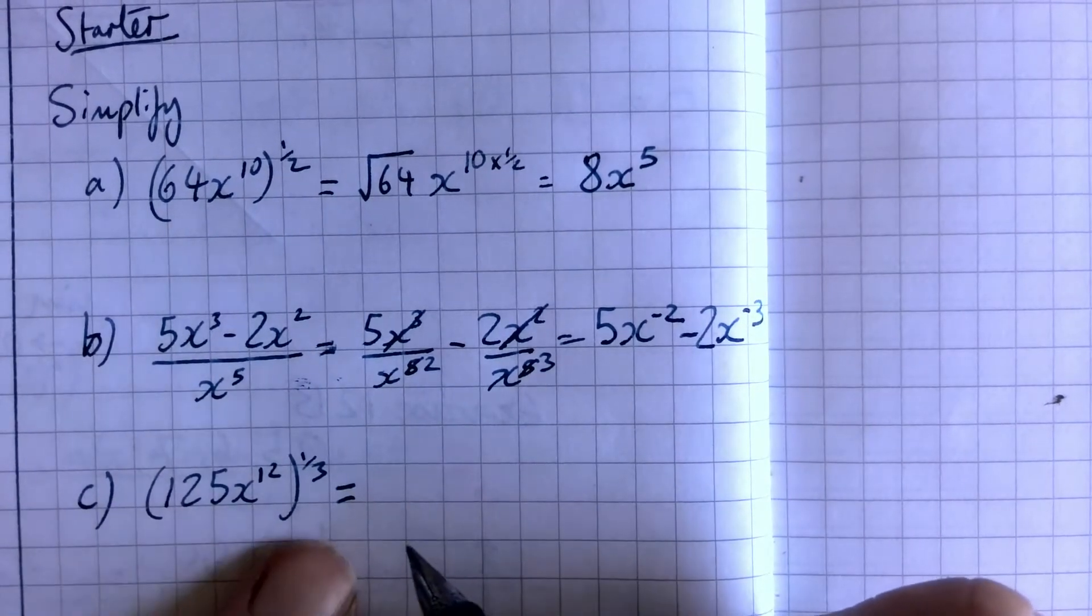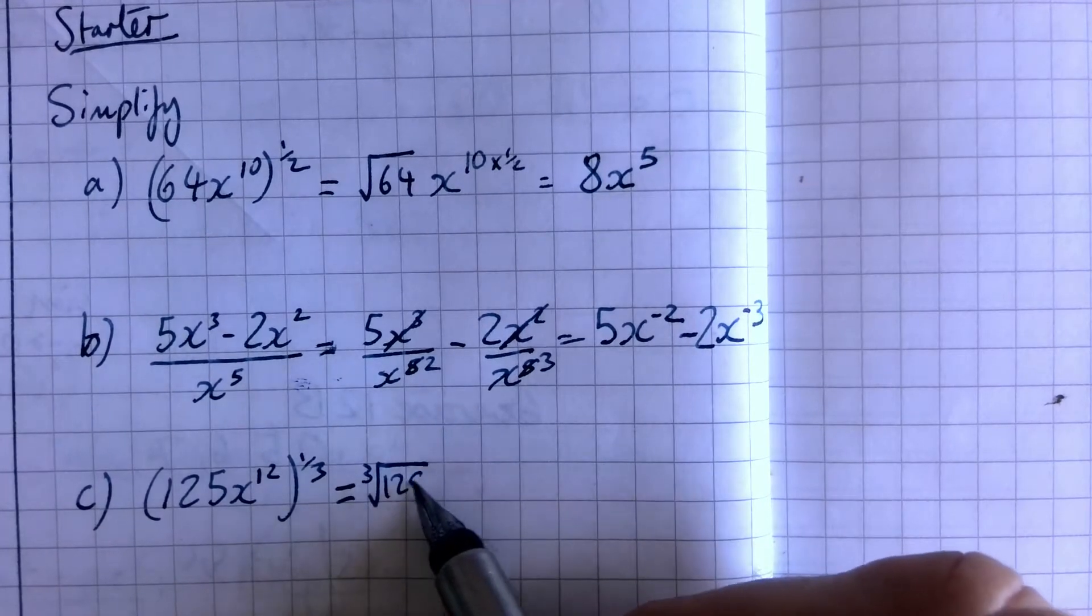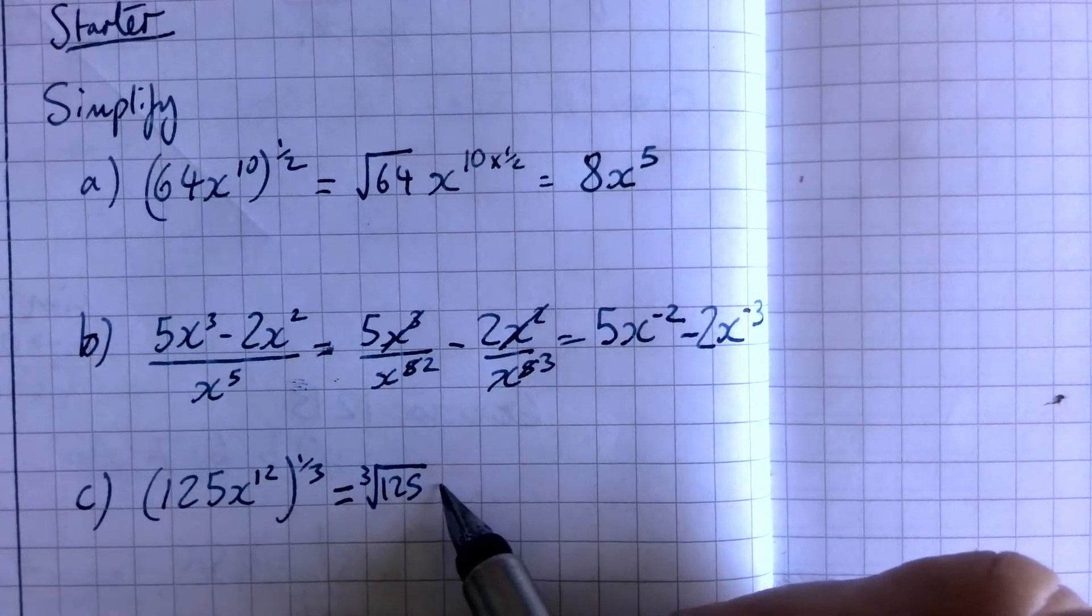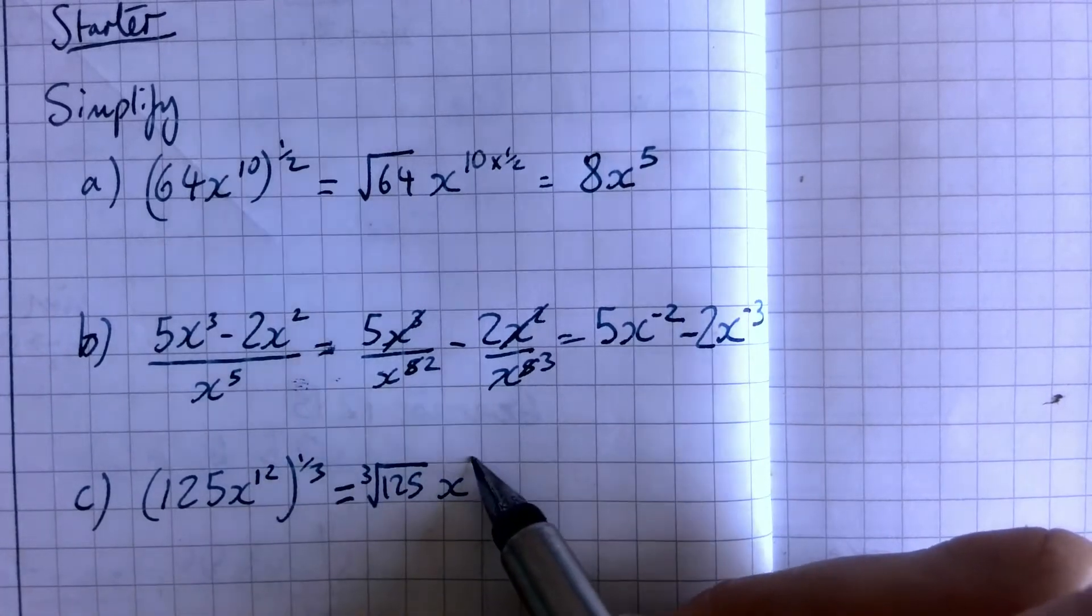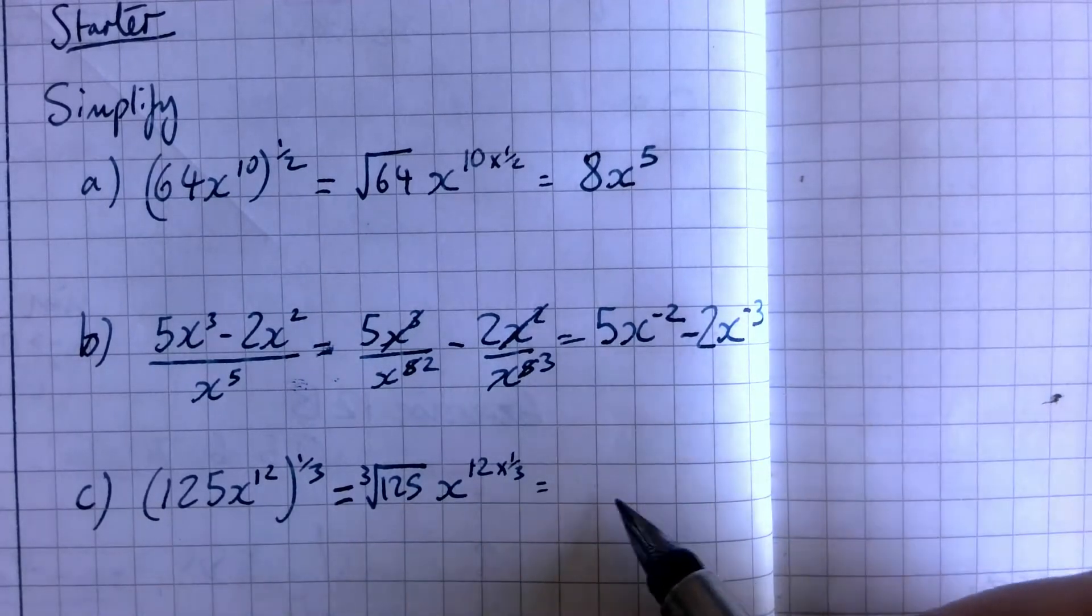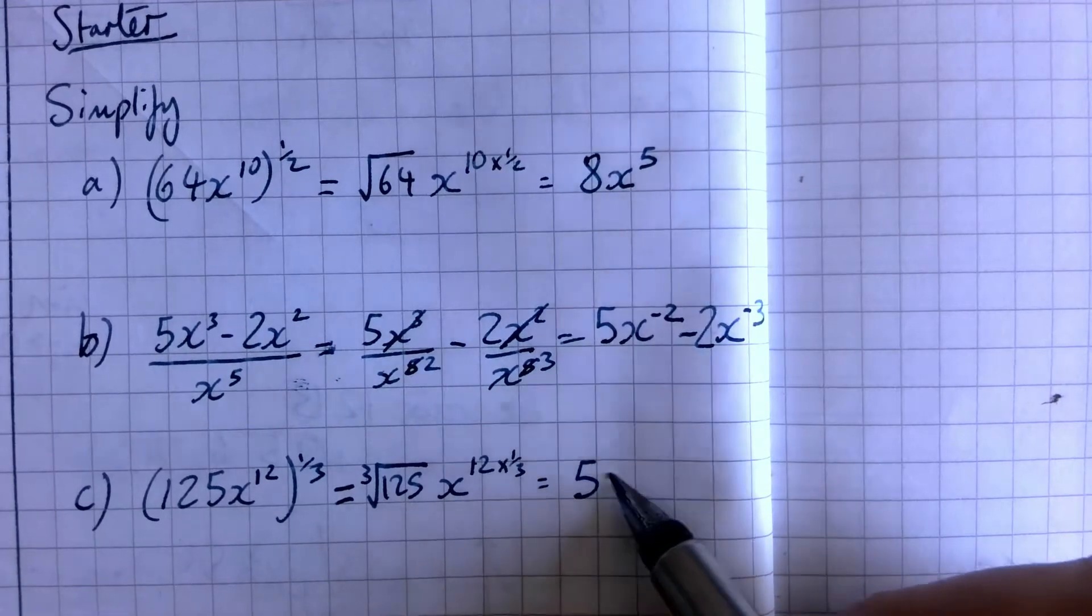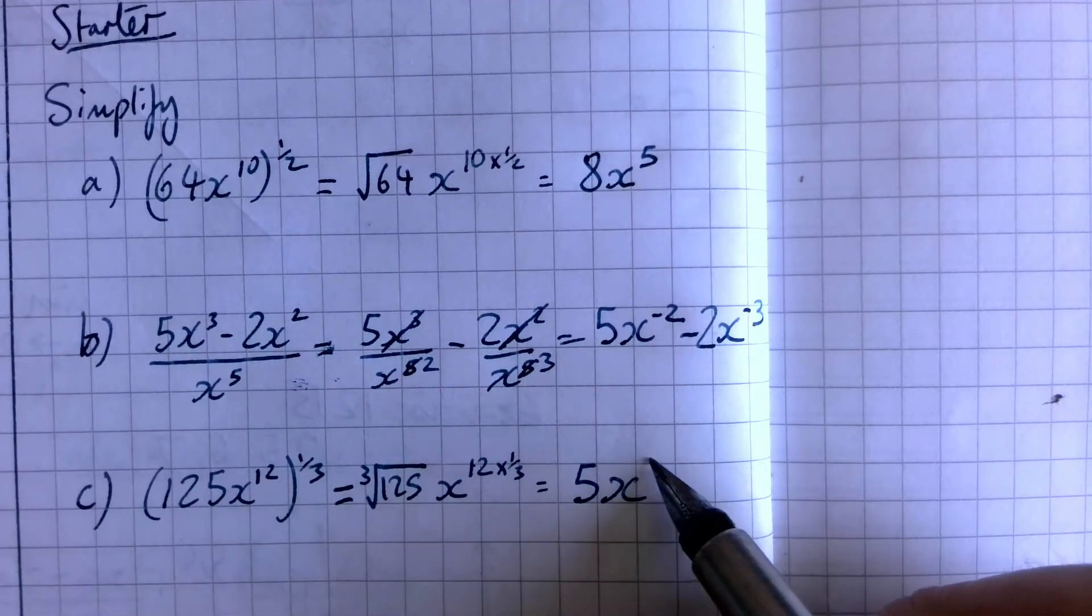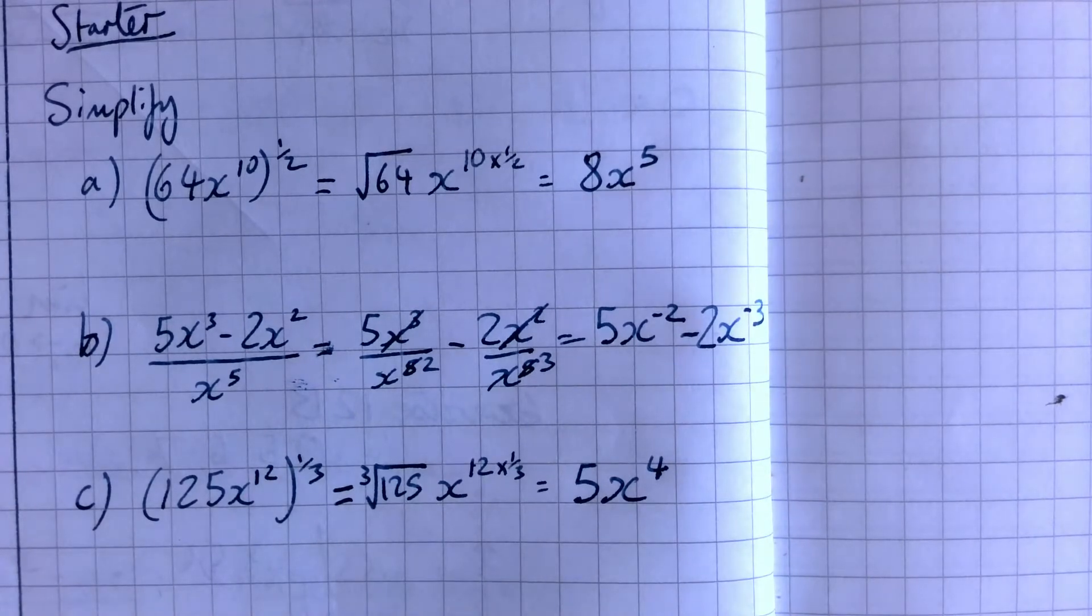Coming on to the third one, the cube root of 125, which is going to be 5. And then we're going to have x to the 12 times a third. So that'll be 12 times a third. And a third of 12 is 12 divided by 3 is 4. So cube root of 125 is 5, x to the power of 12 divided by 3 is 4. So those should be your answers there.